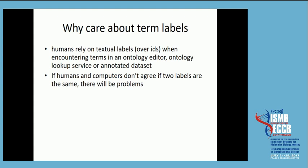So why do we care about term labels? You can say the real identifier is the ID you give an ontology term, but normal humans encounter ontology terms in an editor or a lookup service on annotated datasets by going through the labels. If the labels are confusing — specifically if humans can't distinguish between different terms because the labels look identical to a human but are different for the computer — then all kinds of things break.